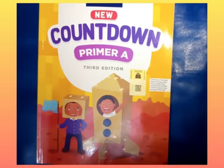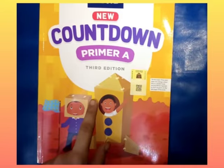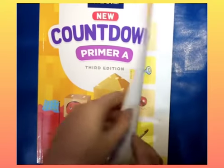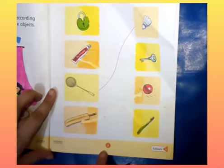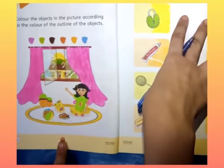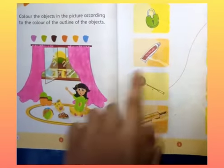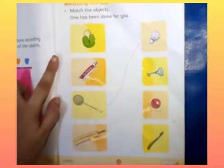Assalamu alaikum, I hope you all are fine. Welcome to the class of kindergarten. I am your teacher Khadijah Nazir. This is your book of Countdown. Today we will do work of Countdown book. Let's start, turn to page number three. This is page number three, this page number two. We already done this page, now it's time to do page number three. Let's start.